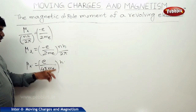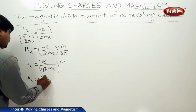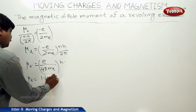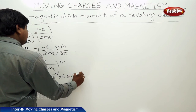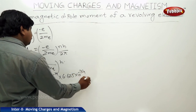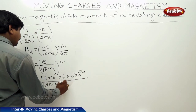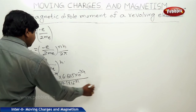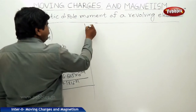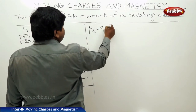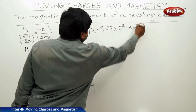Substituting all values: E equal to 1.6 × 10⁻¹⁹ Coulombs, h (Planck's constant) equal to 6.625 × 10⁻³⁴ Joule-seconds, and mass of electron 9.1 × 10⁻³¹ kg into 4π, we calculate the value of mu_L.